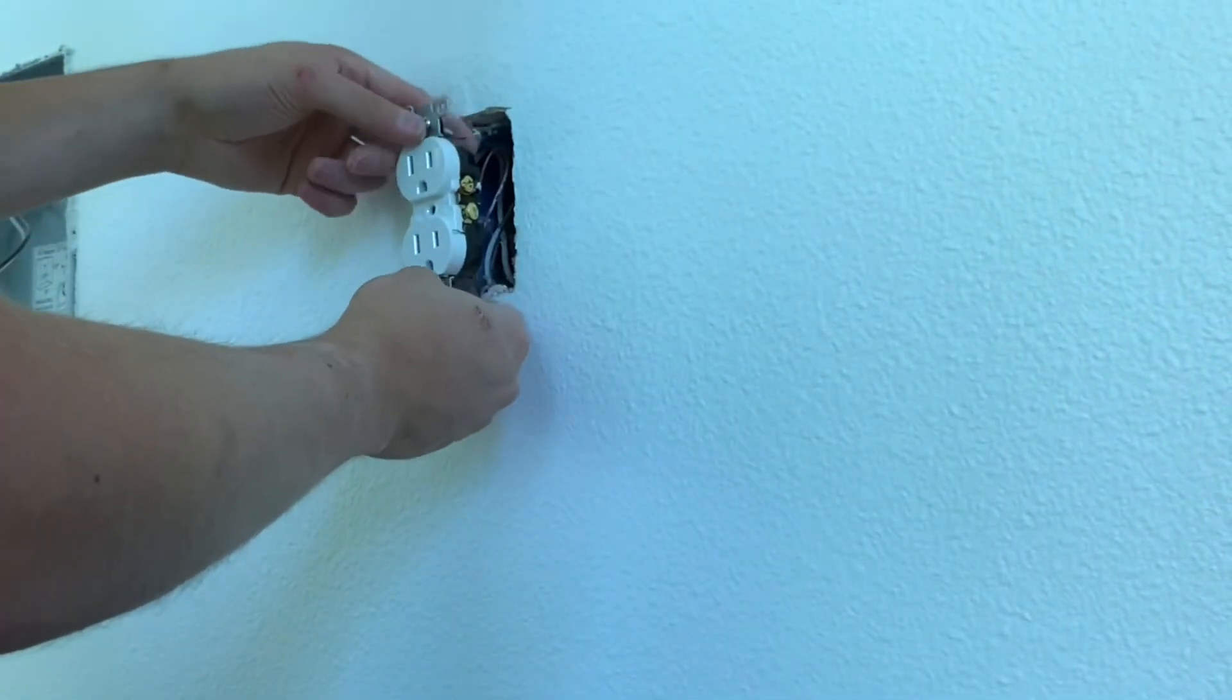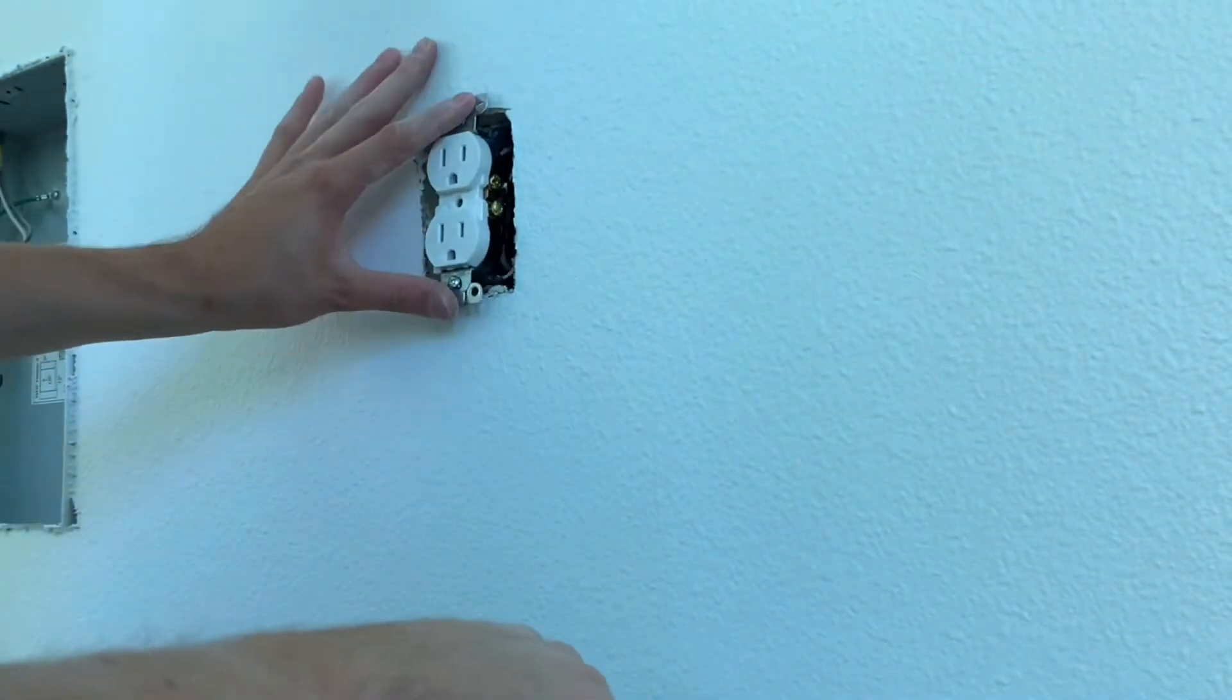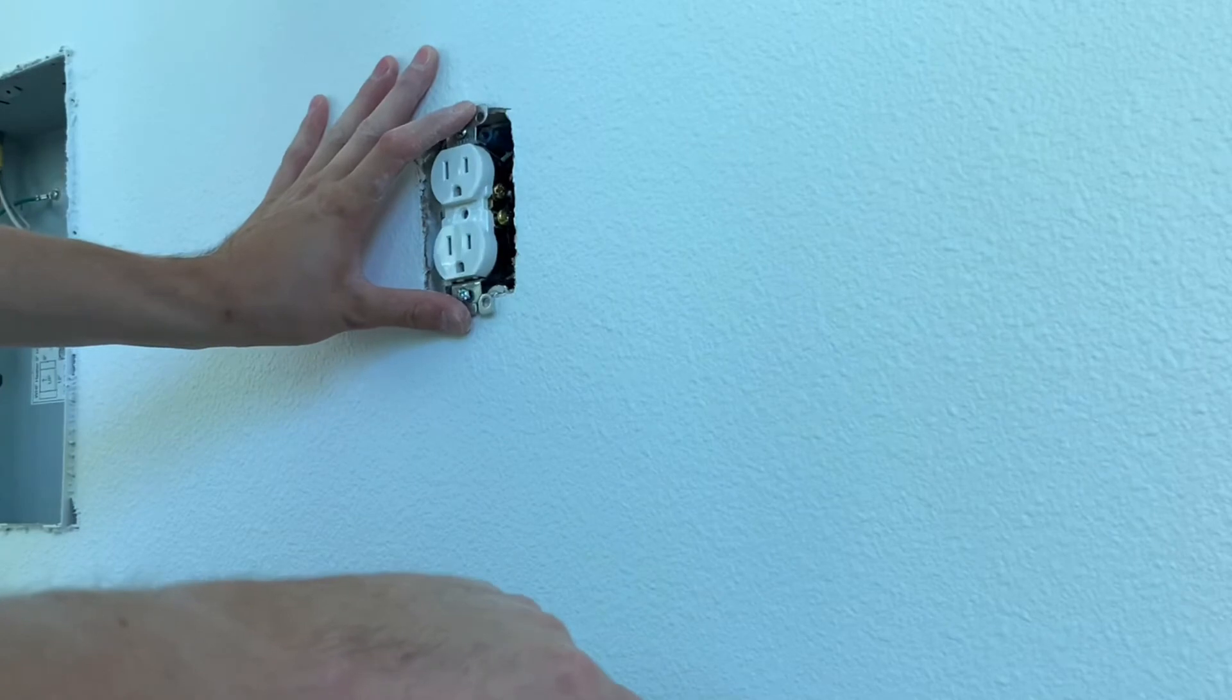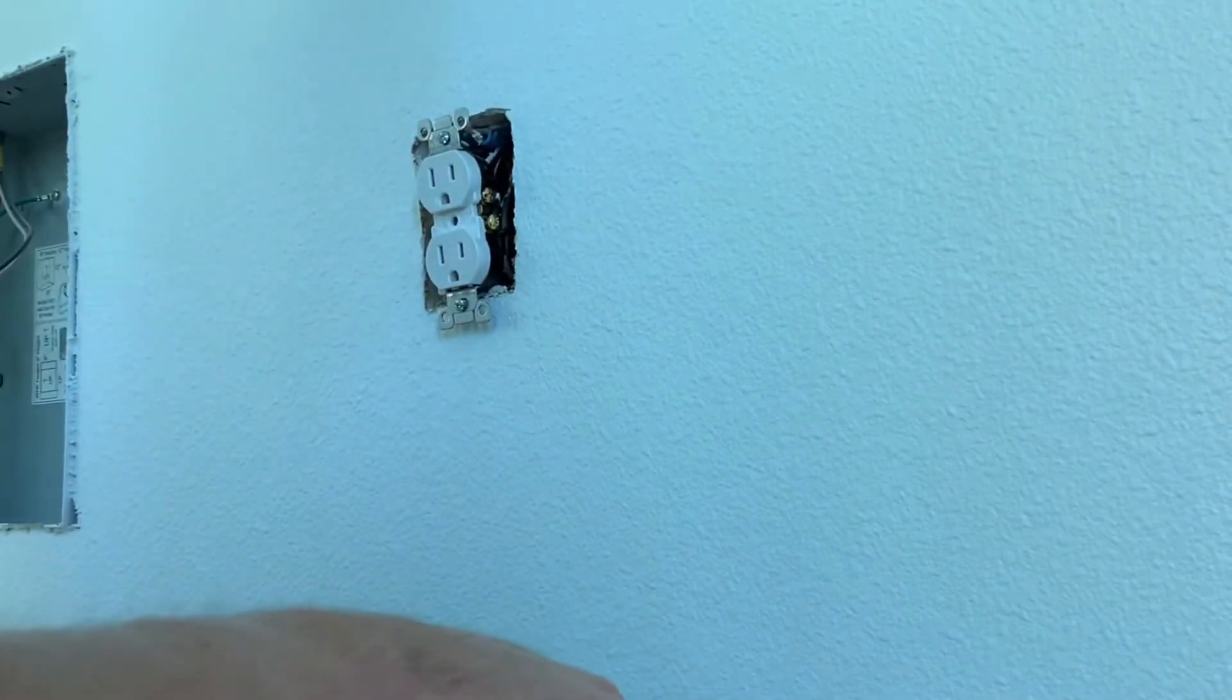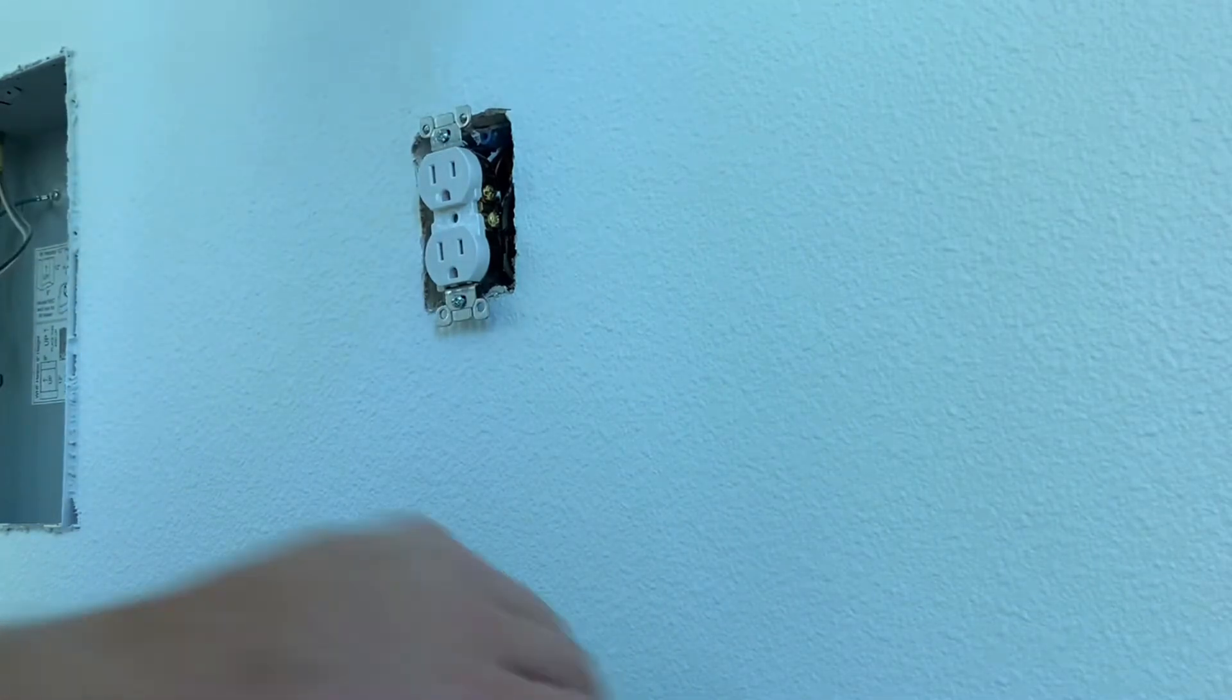You can stick your level on the side of it to make sure it's up and down when you tighten it down, so when you put your cover plate on there that's going to be pretty much straight as well, or it has enough room to straighten it out. But once you tighten this down...